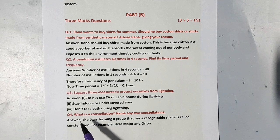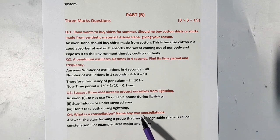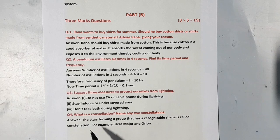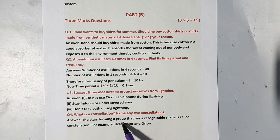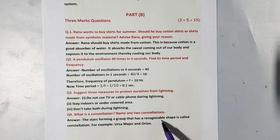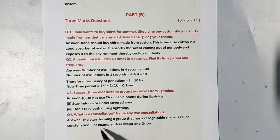Next question: What is a constellation? Name any two constellations. The stars forming a group that has a recognizable shape is called constellation. For example, Ursa Major and Orion.